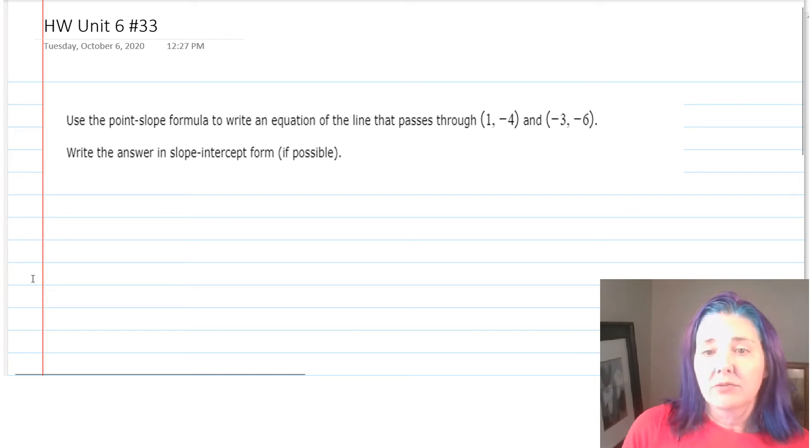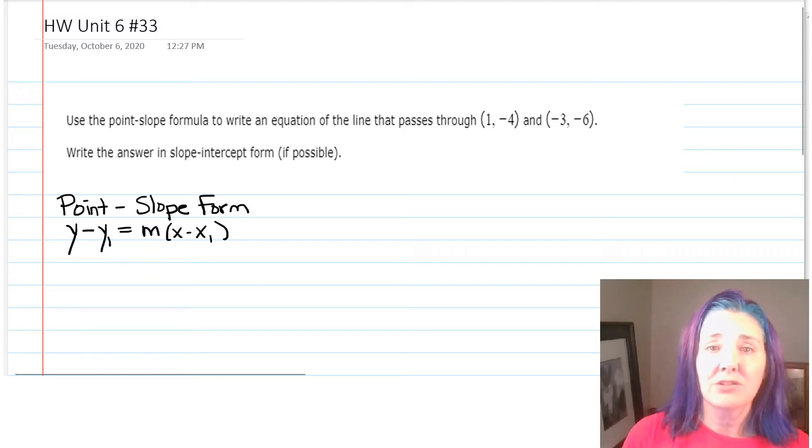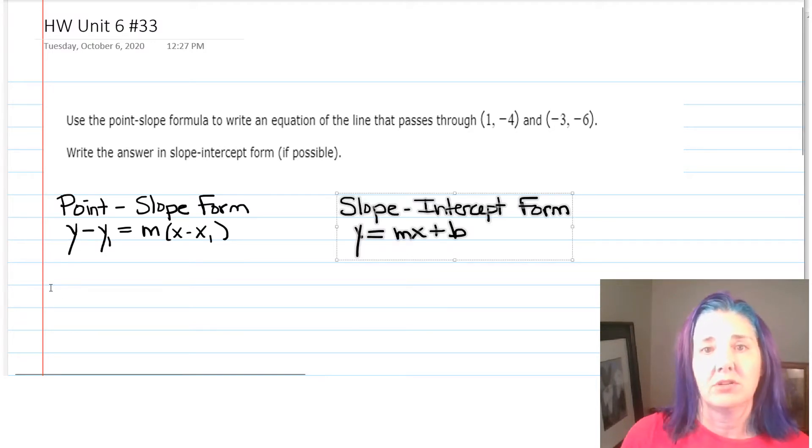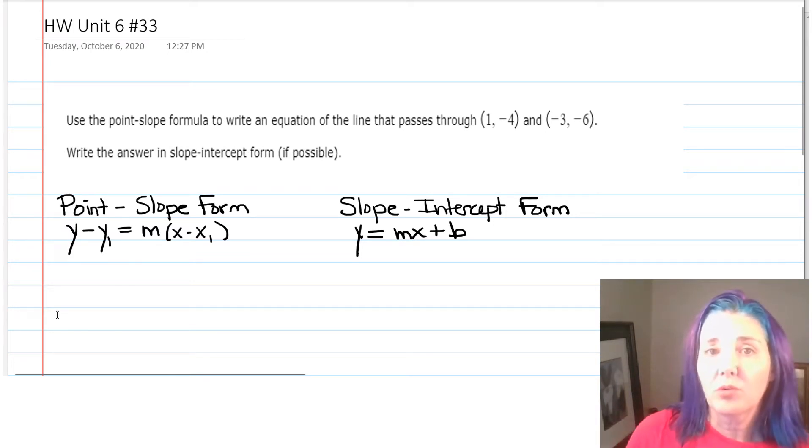Right off the bat, I noticed that they were mentioning a couple of formulas. First of all, they mentioned the point-slope form, which is y - y₁ = m(x - x₁). And then, they also mention the slope-intercept form, which is y = mx + b. They tell us to use the point-slope form to write the equation, but then give our answer in the form of y = mx + b, and this is very common.